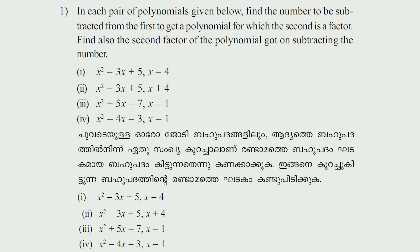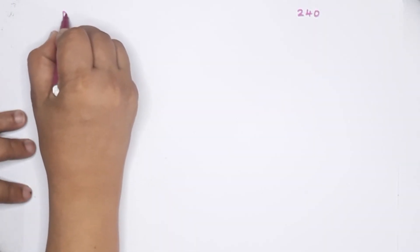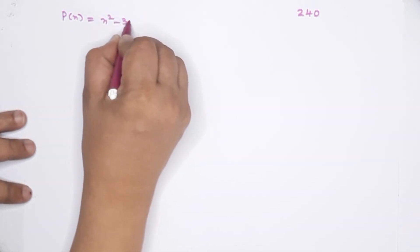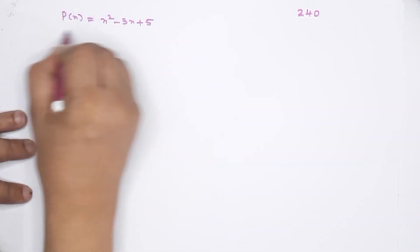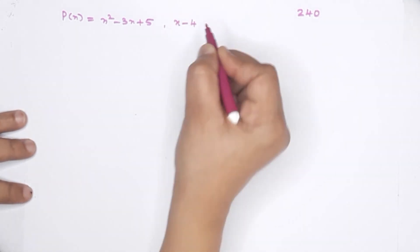In each pair of polynomials given below, find the number to be subtracted from the first to get a polynomial for which the second is a factor. Find also the second factor of the polynomial obtained on subtracting the number. Number one: P of x is equal to x squared minus 3x plus 5, and x minus 4 is a factor.